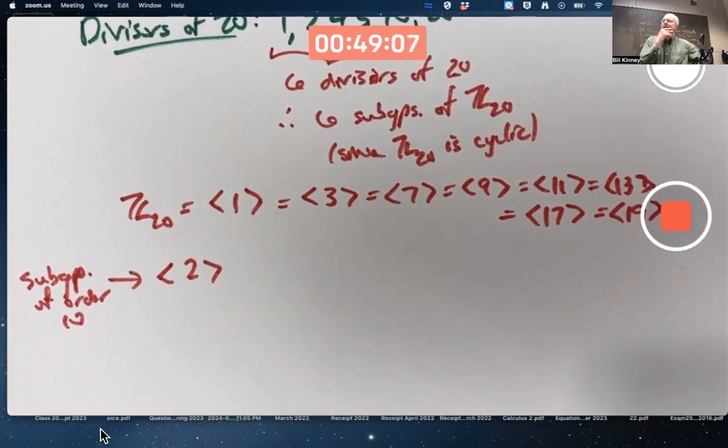What would the other generators of that be? That's a subgroup of order 10. It itself is a cyclic of order 10. What numbers, positive integers less than 10, are relatively prime to 10? 1, 3, 7, and 9.